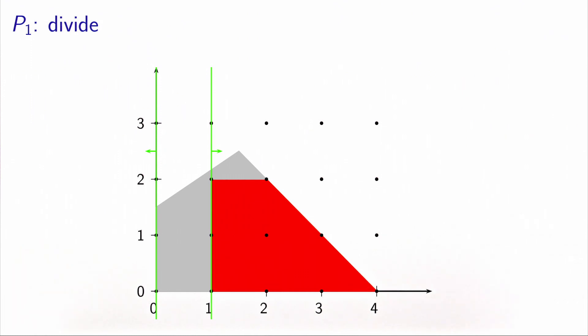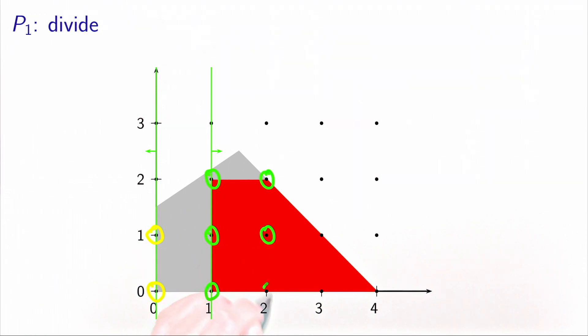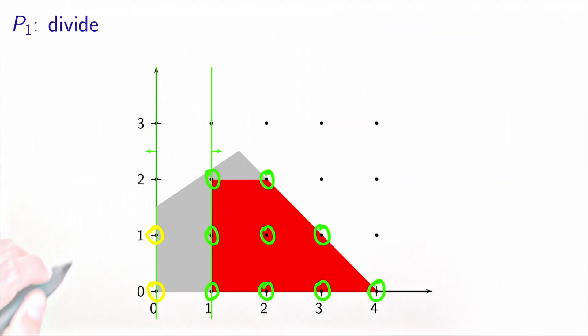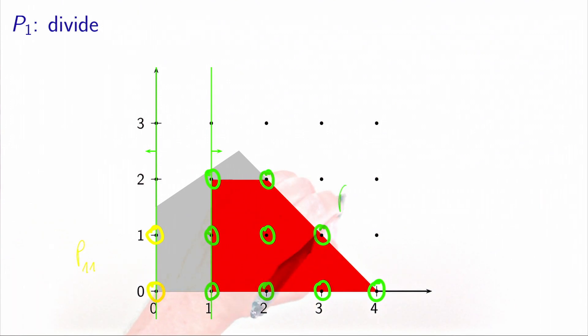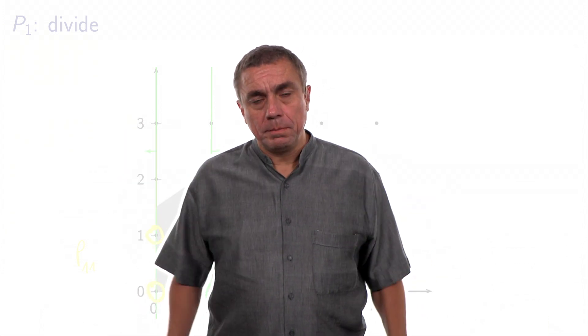Problem P11 contains these two feasible solutions, and problem P12 contains the nine feasible solutions. In this case, both subproblems are feasible, and they represent a partition of problem P1.